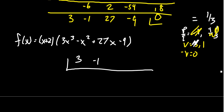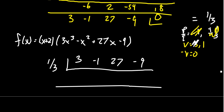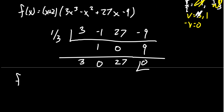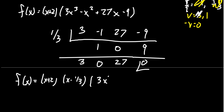Using synthetic division on the cubic with x = 1/3, using coefficients 3, −1, 27, −9: bring down the 3, (1/3)×3=1, −1+1=0, (1/3)×0=0, 27+0=27, (1/3)×27=9, −9+9=0. So x = 1/3 is a root. This gives us f(x) = (x + 2)(x − 1/3)(3x² + 27). Factoring out a 3 from the quadratic leaves x² + 9, and redistributing the 3 onto the linear factor gives us (3x − 1), so the real factorization is (x + 2)(3x − 1)(x² + 9).